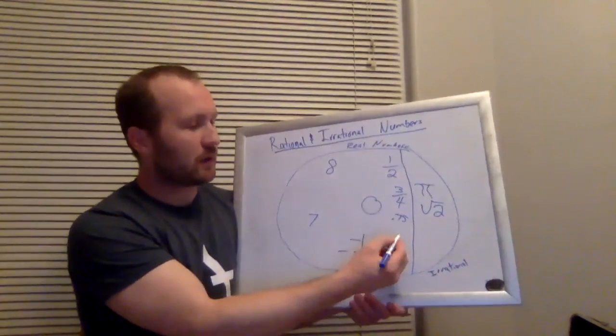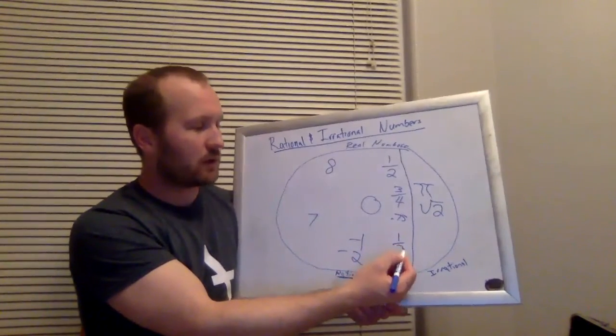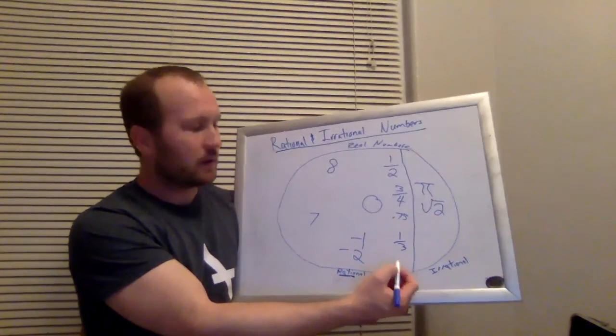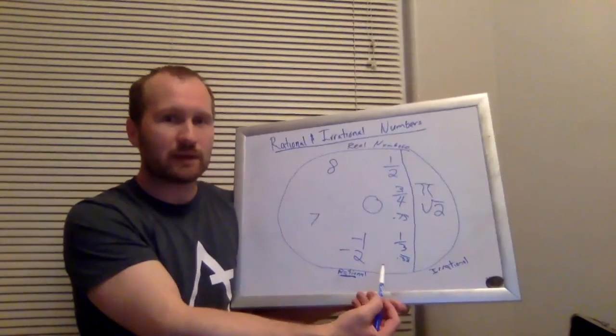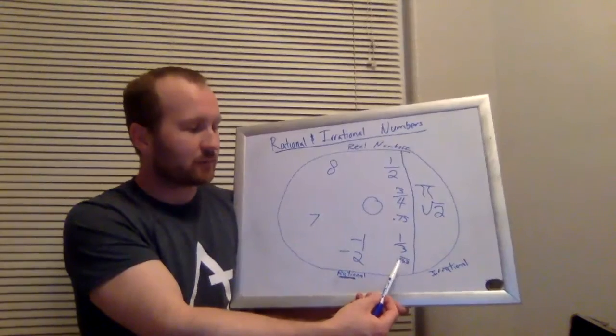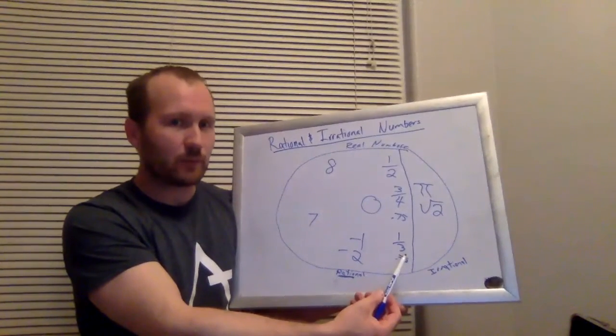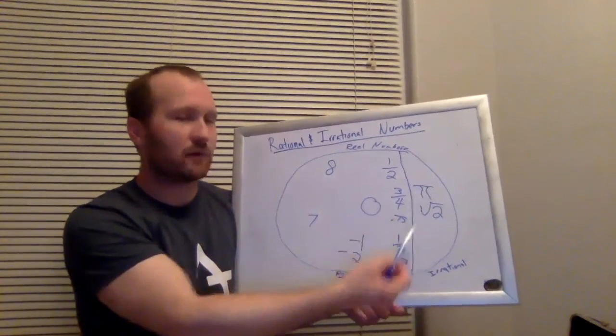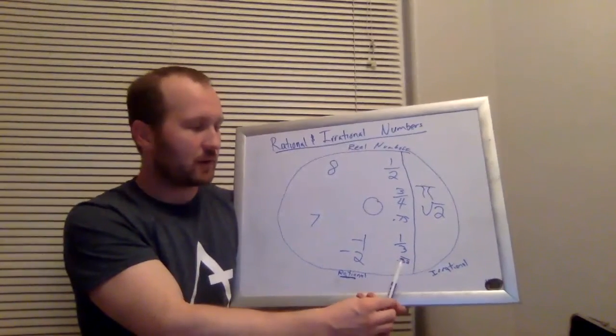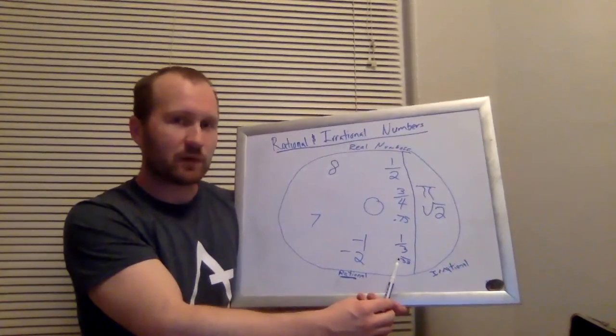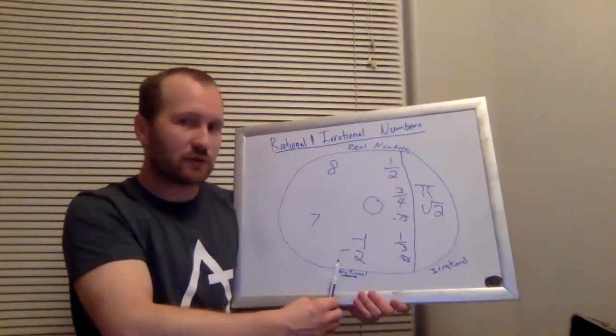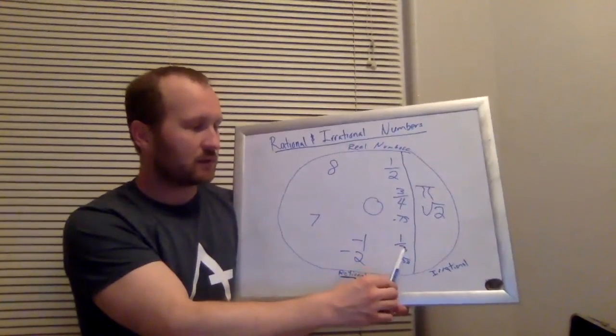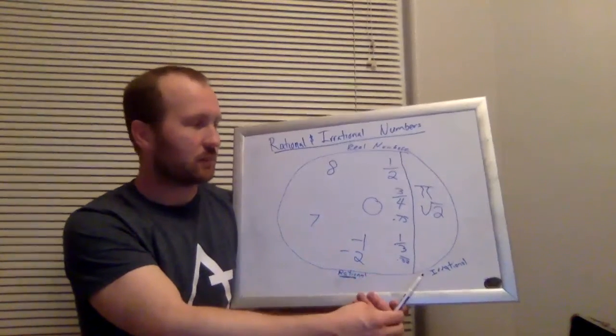So you might think of a number like one-third, and you might know that one-third as a decimal is 0.33 repeated. That's a number that is also infinite, that never ends, and it repeats though. These numbers over here will never, ever repeat, whereas one-third is a number that does repeat. And even though it doesn't end, it's still rational. And look, it can be written as a ratio of two integers, two whole numbers.